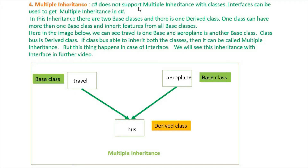C# does not support multiple inheritance with classes. Interfaces can be used to achieve multiple inheritance in C#. In this inheritance, there are two base classes and one derived class. One class can have more than one base class and inherit features from all base classes.